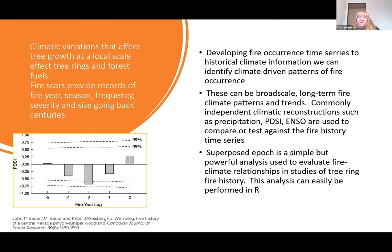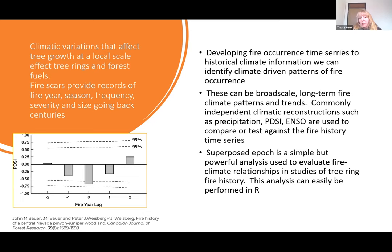By developing a fire occurrence series and correlating it to climate information, we can help identify the climatic patterns of these occurrences. The climatic variables we often use are precipitation, Palmer Drought Severity Index, and ENSO — these are often compared against the fire history time series. A simple but powerful analysis often used to create these relationships is the superimposed epoch.